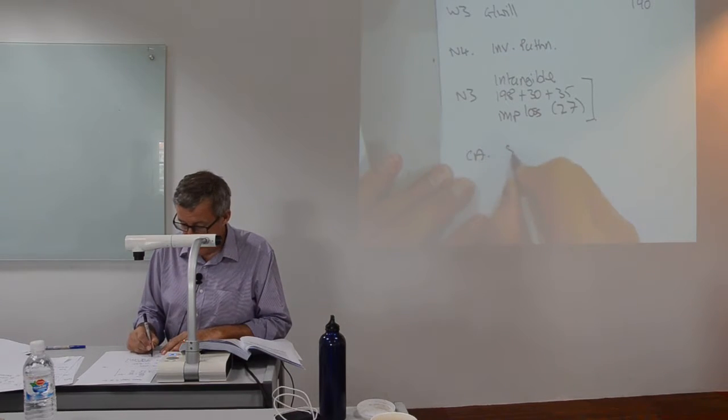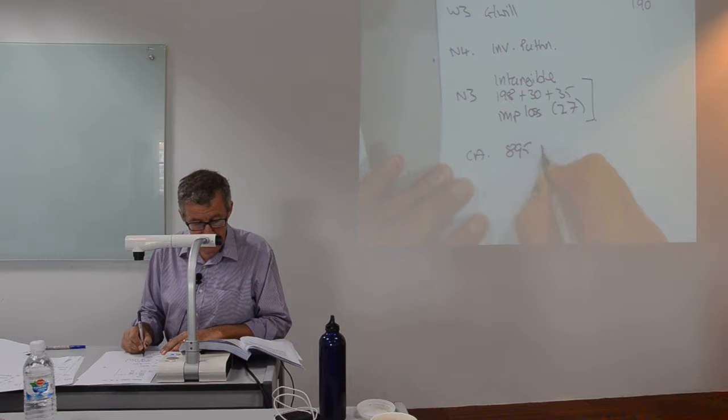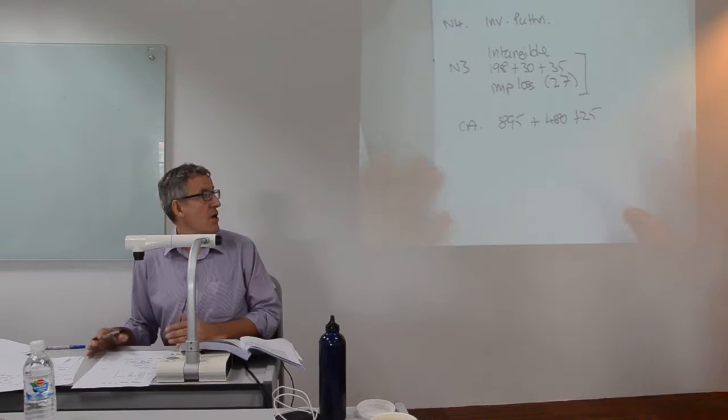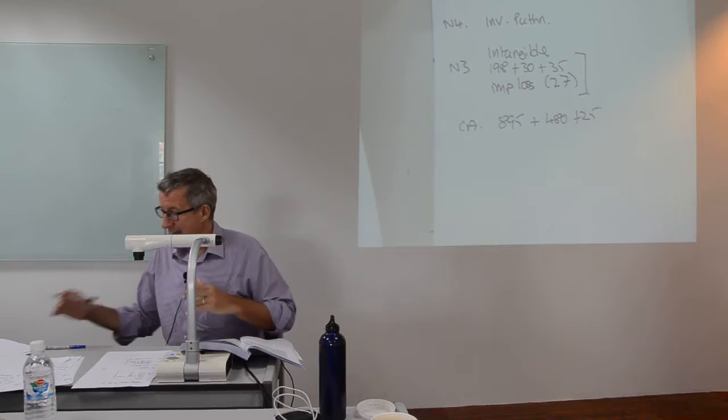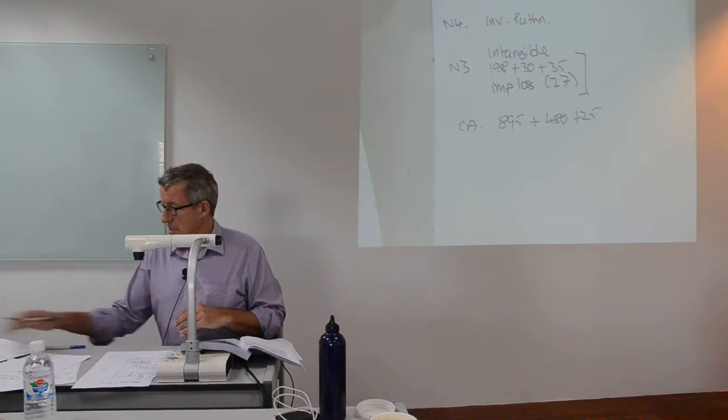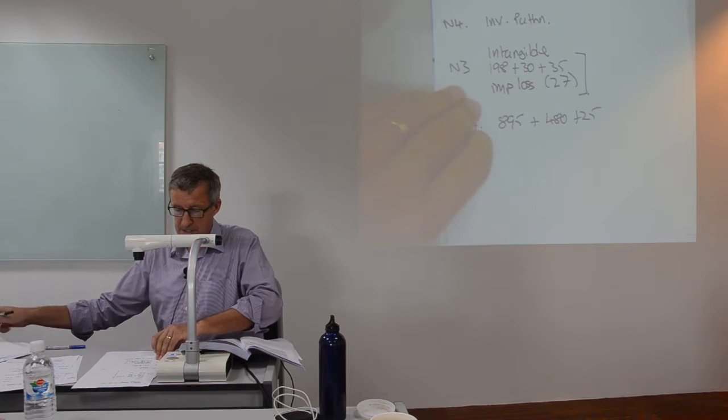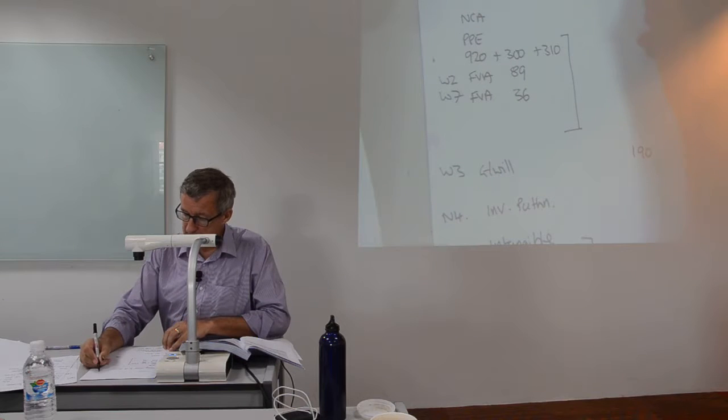Finally, there are current assets. Current assets are 895, 480, and 23. So, that deals with our asset situation. That deals with our asset situation, so far as I am concerned. We can come back, tidy it up a little bit later. But here I am, looking at the bottom half.